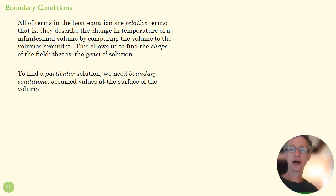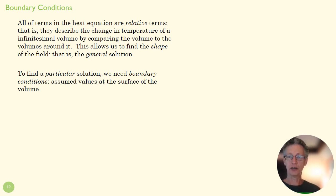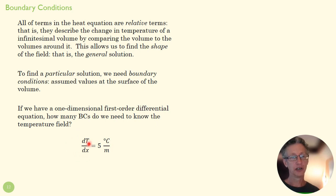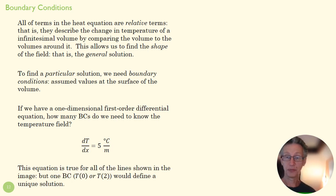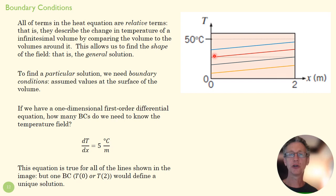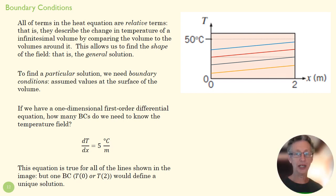We want to find a particular solution. In order to do that, you need boundary conditions — some assumed values at the surfaces of our field. For example, if our differential equation is first order — say the slope equals 5 — that just tells us the family of lines with a slope of 5. If we want one unique solution and we say our initial temperature is 25, then our particular solution has to be that red line. So a first-order differential equation needs one boundary condition.